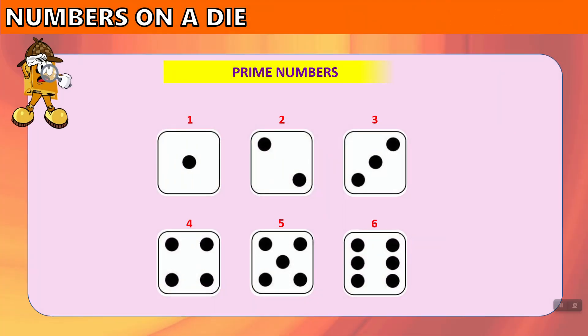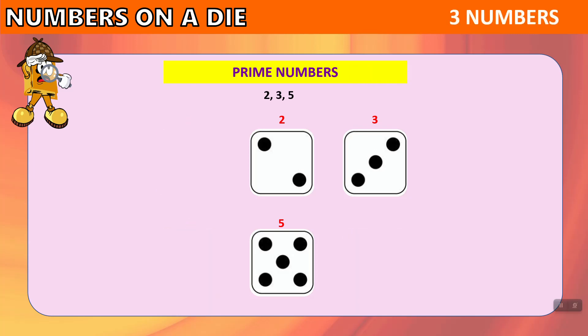What about the prime numbers that exist on a die? The prime numbers on the die are 2, 3, and 5. Remember, 1 is not a prime number. So there are three prime numbers on a die: 2, 3, and 5.